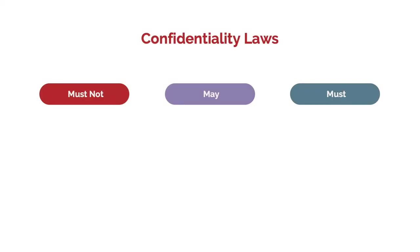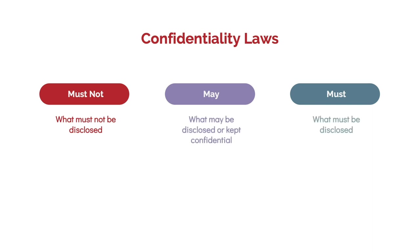Let's start by reviewing the confidentiality laws. Confidentiality laws tell us three important things: what must not be disclosed, what may be disclosed, and what must be disclosed. Having the right tools in place, such as compliant forms and memoranda of understanding, can support and encourage appropriate and balanced sharing of information.